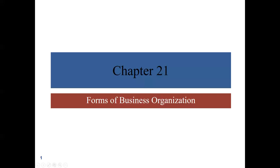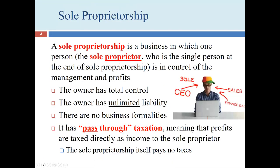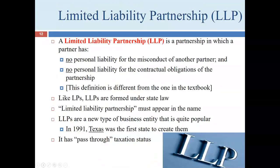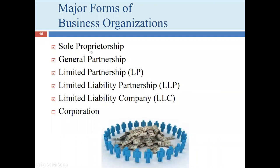Welcome to our second presentation on Chapter 21, which covers the various forms of business organization. When we were last together, we discussed five different business forms. We covered sole proprietorship, general partnership, then three partnership forms: general partnership, limited partnership, limited liability partnership, and finally the limited liability company.